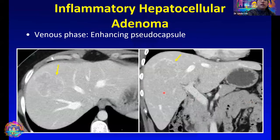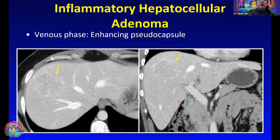Another helpful feature for diagnosing adenoma is the enhancing pseudocapsule. On the venous phase, we can appreciate that there's an enhancing capsule along the periphery of the lesion. As mentioned previously, FNH is an unencapsulated lesion, so if we see an enhancing capsule or pseudocapsule on the venous phase, adenoma would be a good choice — and so is HCC, as we will get to it.